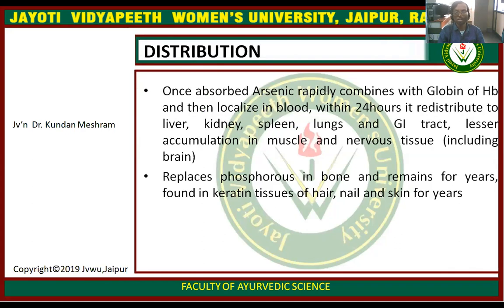Once absorbed, arsenic rapidly combines with globin or hemoglobin and is localized in blood within 24 hours. It is then redistributed to the liver, kidney, spleen, lung, and gastrointestinal tract, with later accumulation in the muscle and nervous system including the brain. It replaces phosphorus in the bone and remains for years. It is also found in keratin tissues of the hair, nail, and skin for years.